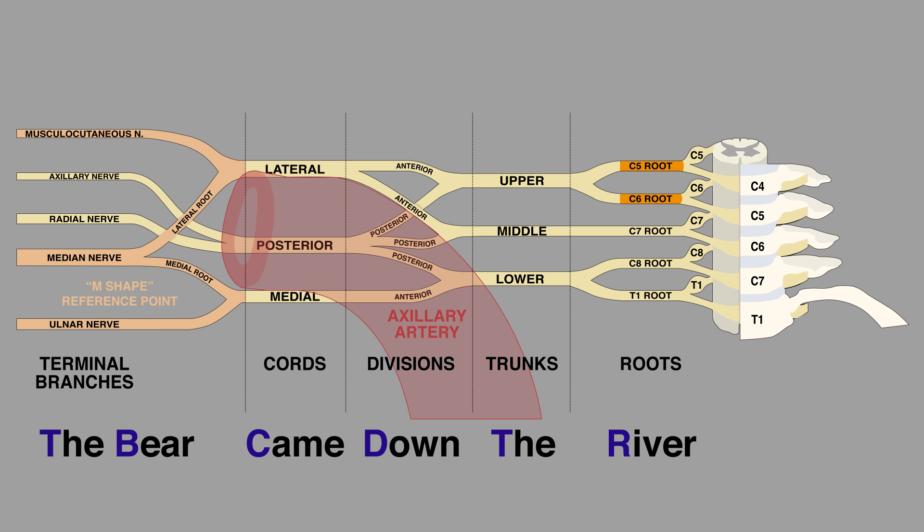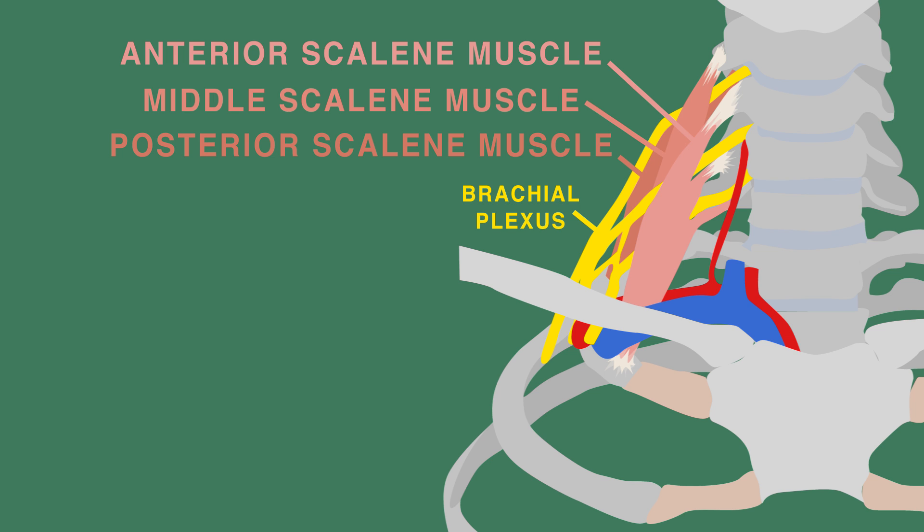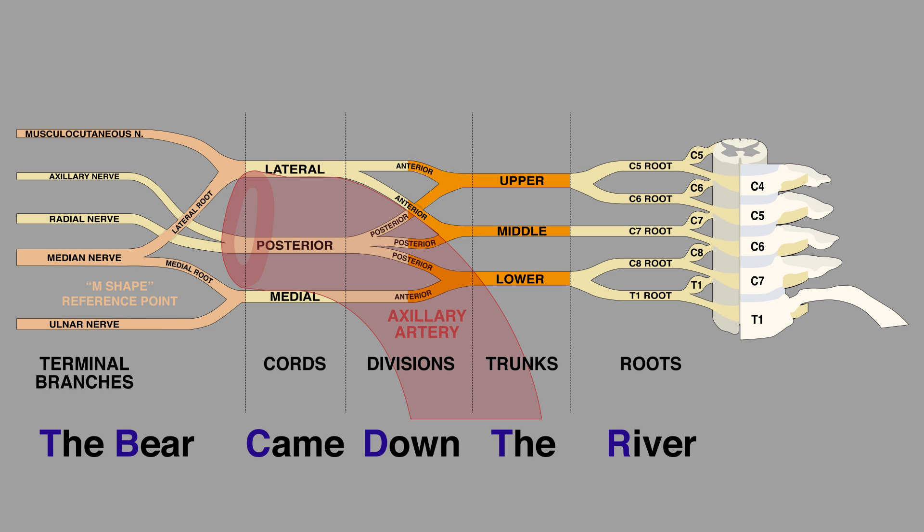The C5 and C6 roots join to form the upper trunk. The C7 root continues on to form the middle trunk, and the C8 and T1 roots join to form the lower trunk. The scalene muscles are on either side of the brachial plexus, lateral to the cervical tract. All three trunks split into an anterior and posterior division, with the anterior divisions being more superficial.